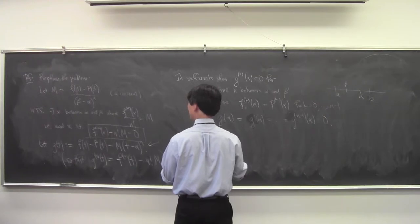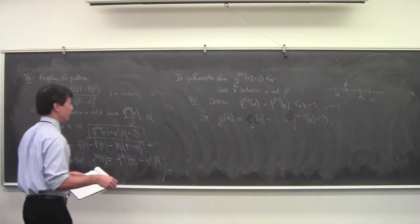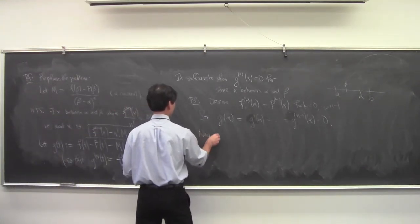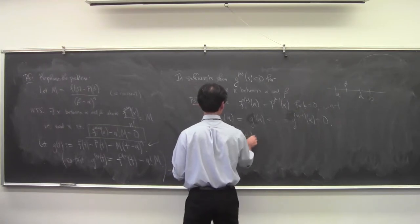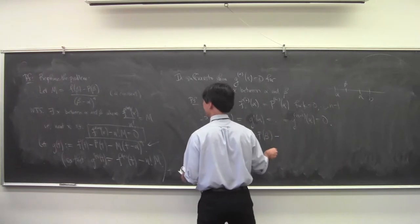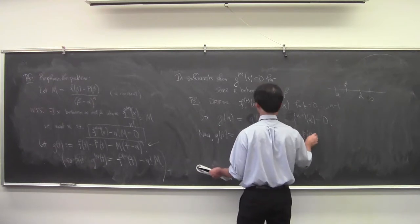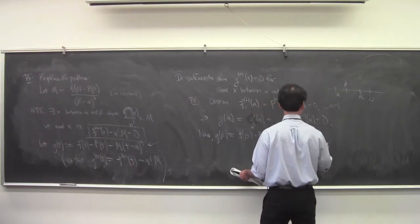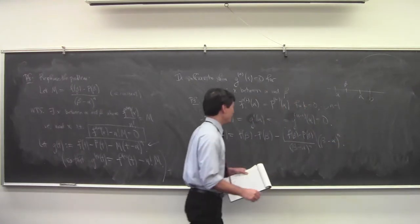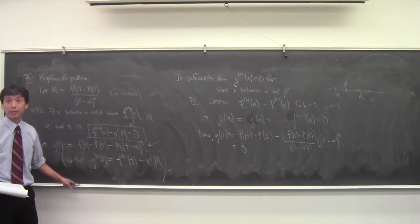Now let's look at g(beta). g(beta) = f(beta) − P(beta) − M · (beta − alpha)^n. Recall that M = [f(beta) − P(beta)] / (beta − alpha)^n. So you can see that g(beta) = 0 by construction — we built M precisely so that this would be zero.